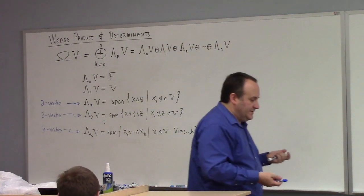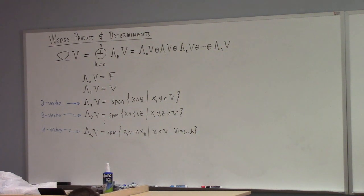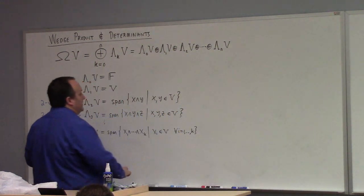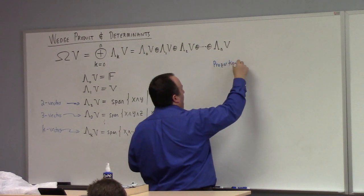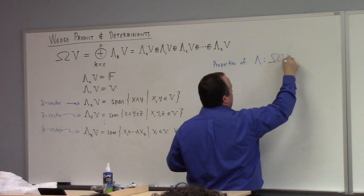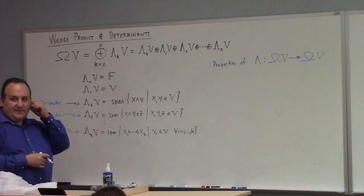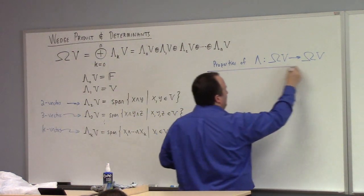What's different from last class is that the thing we're trying to gain information about is V, but we're adding things to V and defining a multiplication on these additional things — in that sense it's exterior. The wedge product is a mapping from omega_V to omega_V again. It takes k-vectors to k-vectors. Let me describe it in terms of its properties.